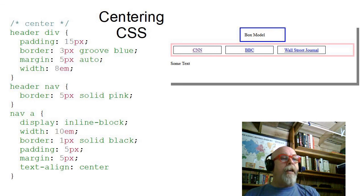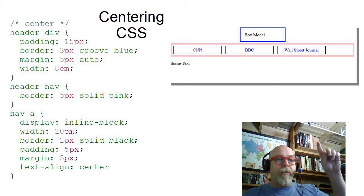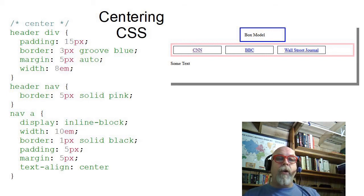I also then centered the text on the buttons, or on the A's, because I do a NAV A inline blocks that it's width to 10 EM. I then set a border padding margin, and then I said text align center. So now the text is centered within those block elements.